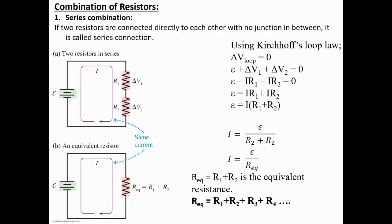Now let's begin with combinations of resistors. You can combine resistors — and capacitors or any components — in two ways: series and parallel. In a series combination, if you have two resistors R1 and R2 connected in series and connect them to a battery, the conventional current flows from positive to negative. Our job is to find the total equivalent resistance of this combination.